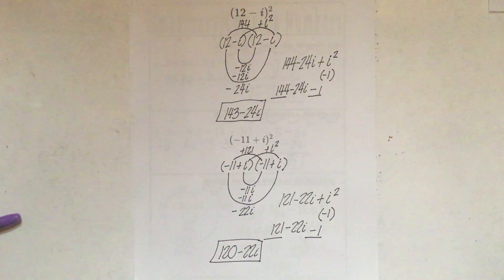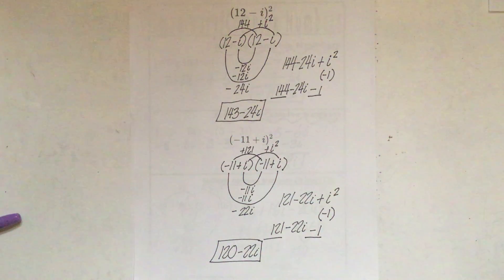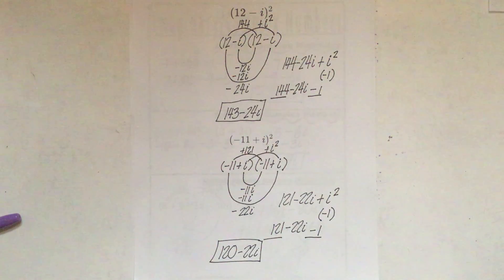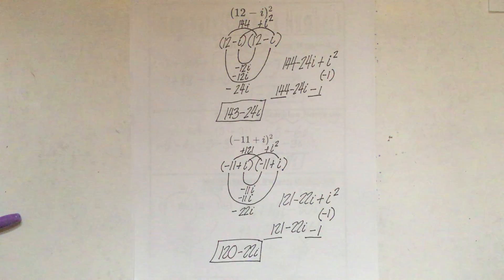And there you go. Those are the examples you're going to see on Delta Math for multiplying complex numbers.